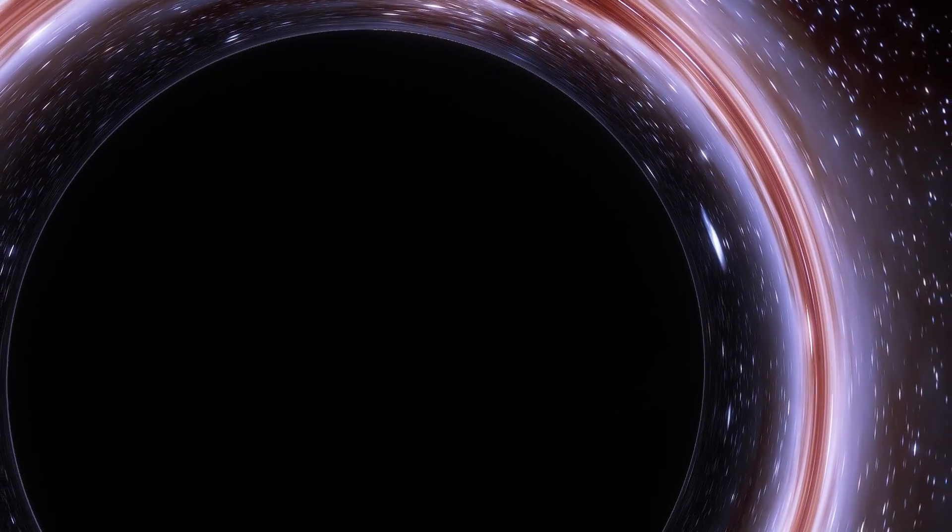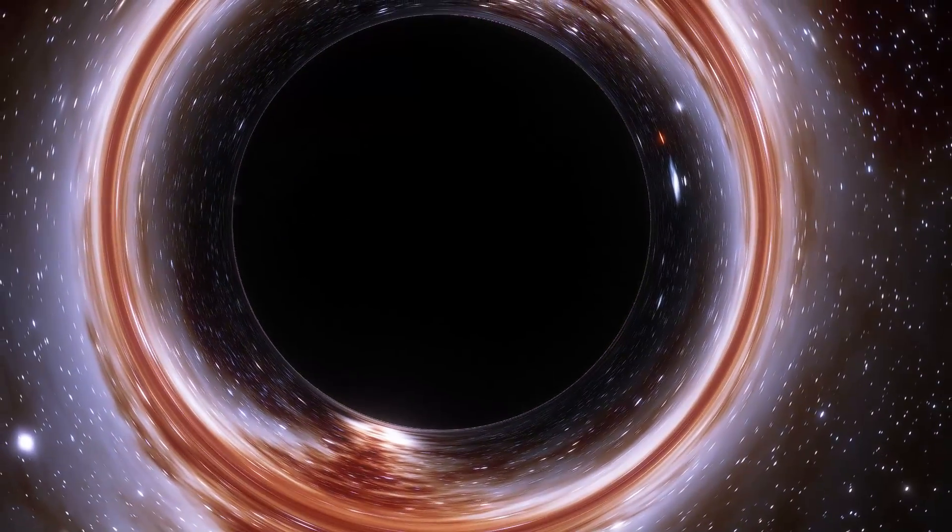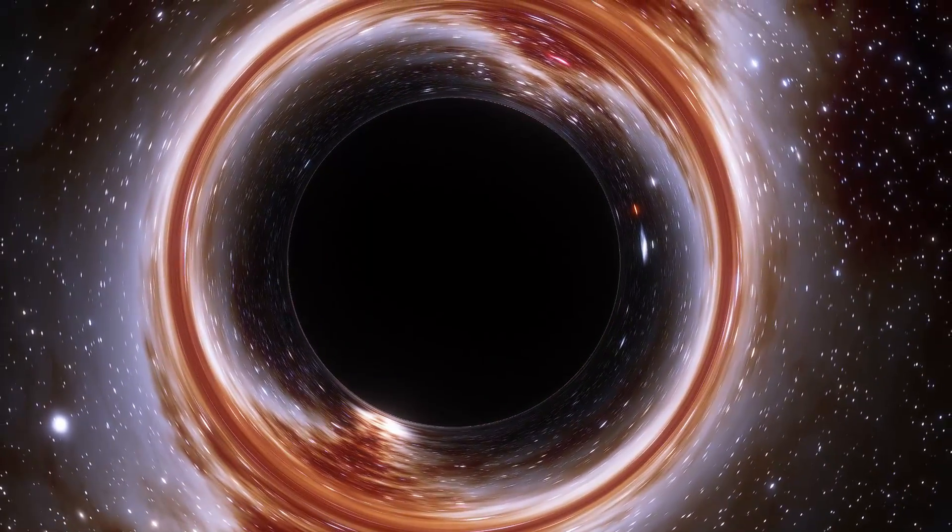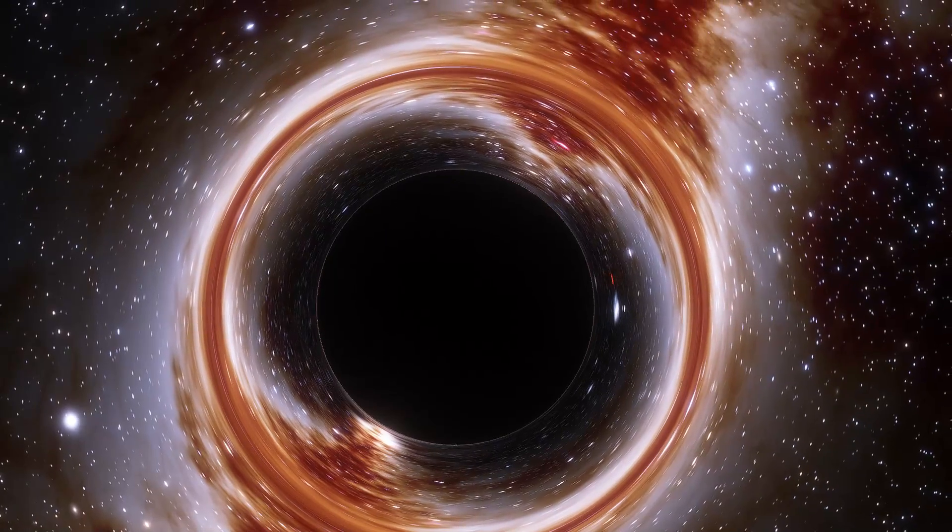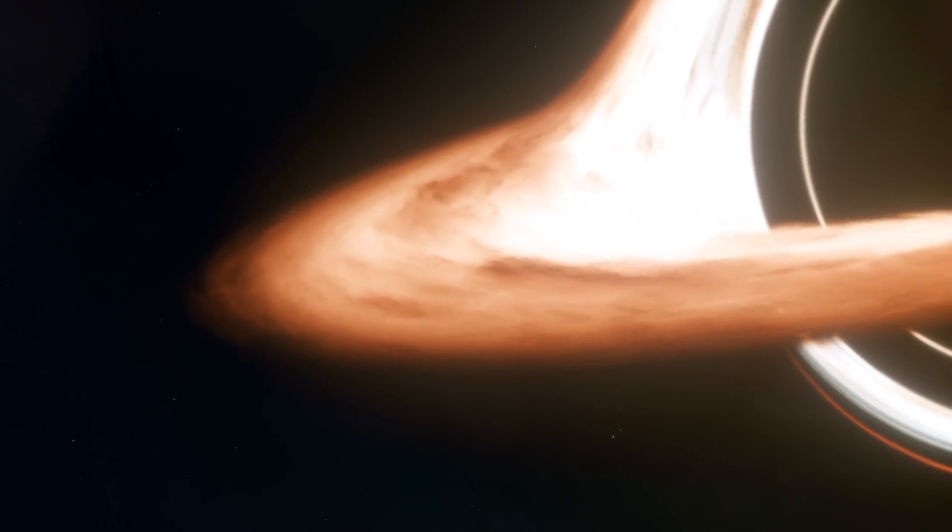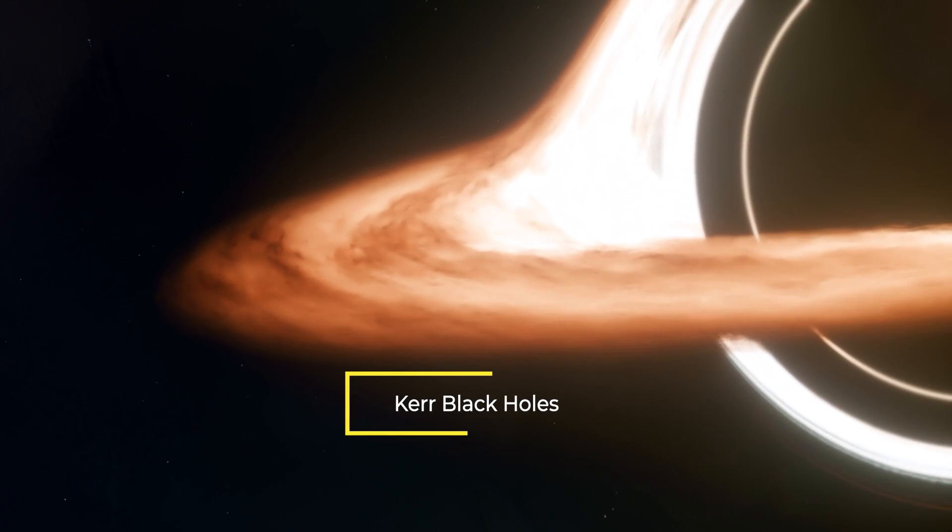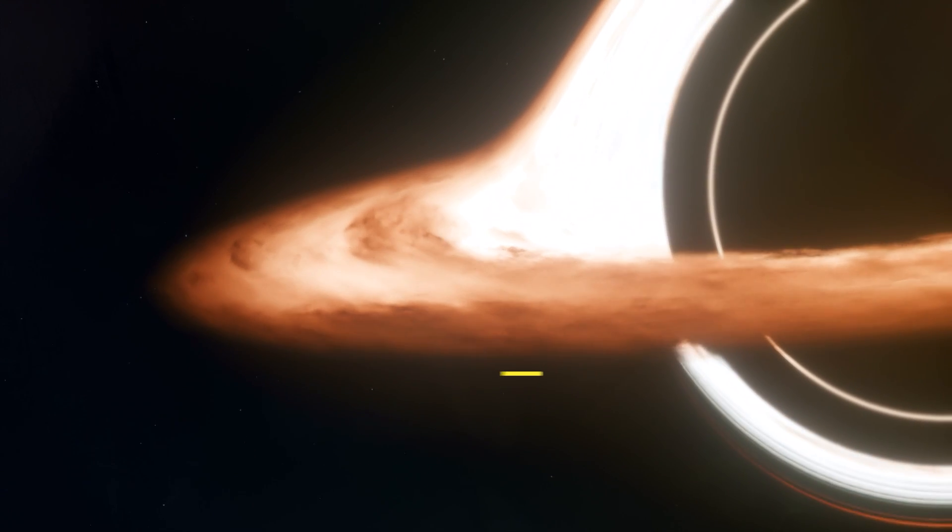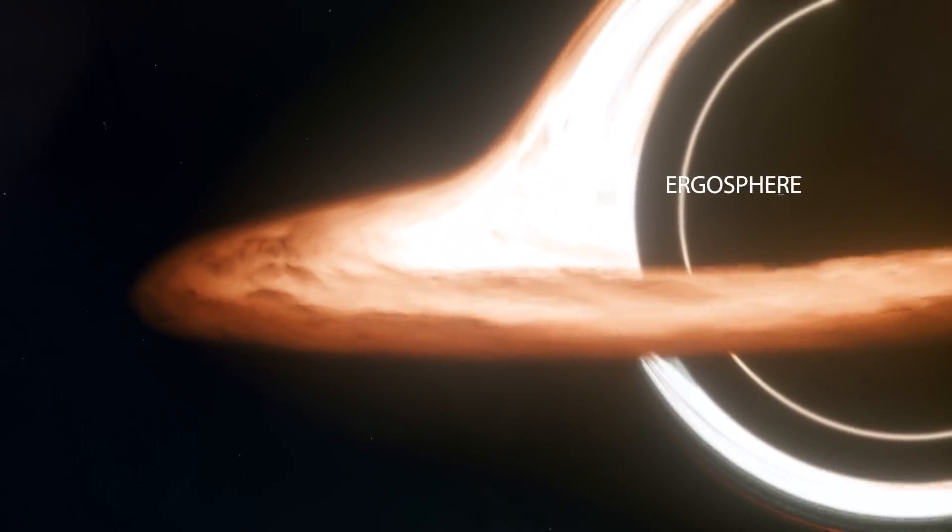But whatever's outside the event horizon can be within our reach. Because it's impossible to get any information out of the event horizon, we will never know what's inside it. But spinning black holes, also known as Kerr black holes, have another region just above the outer event horizon, called the ergosphere.